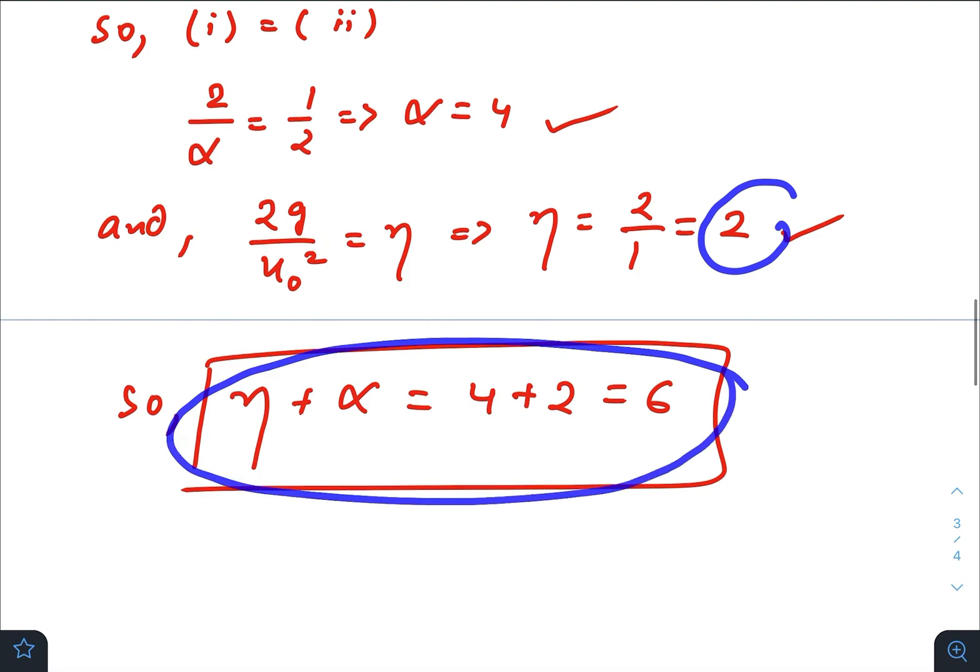Eta plus alpha is equal to 6, so the correct answer would be 6. So I hope you all have found this video helpful and informative.